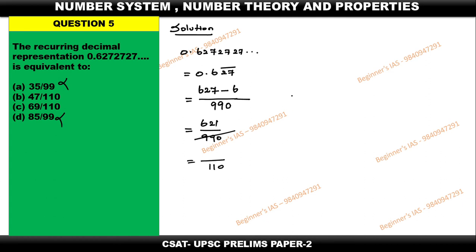For that, just divide the numerator with 9. Here 9 into 6 is 54. With this itself you can identify: since here 4 is present, that is also wrong. The answer is C: 69 by 110.